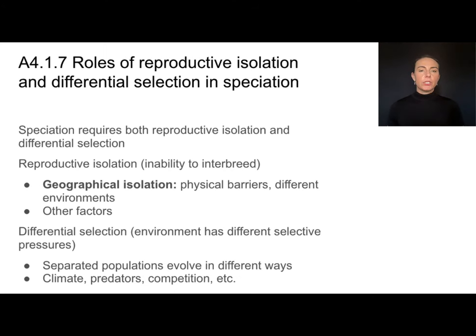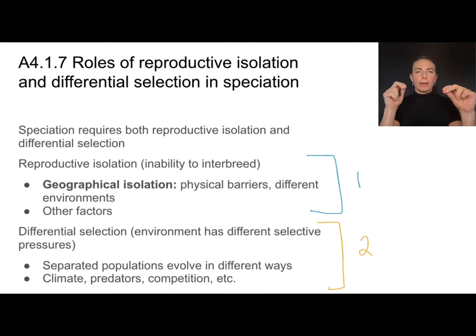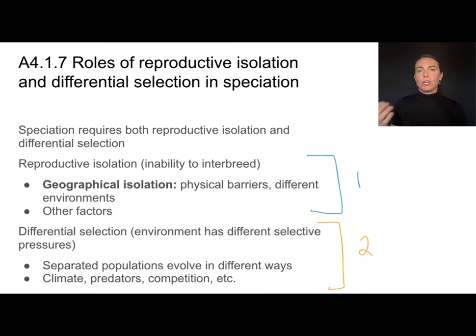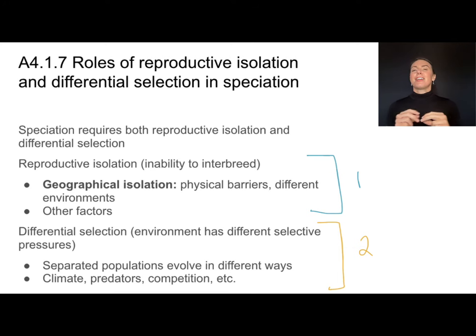For speciation to take place, two things must be true. First, we need some kind of reproductive isolation — populations must be isolated geographically, such as by a river, mountain, or lava flow, or some other factor that causes populations to separate and no longer reproduce. Second, we need differential selection — environments with different selective pressures, meaning different factors give certain traits an advantage in one population but different traits the advantage in the other. Over long enough periods of time, organisms evolve in different pathways due to different climates, predators, competition, or diseases. Both reproductive isolation and differential selection are needed for speciation to take place.